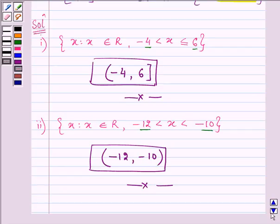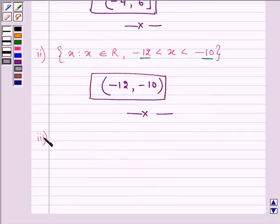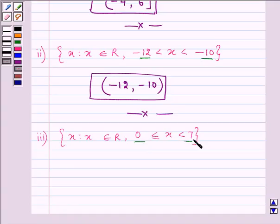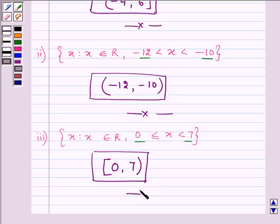Proceeding on to the third part. So here we are given X belongs to R, 0 is less than or equal to X which is less than 7. Now here the interval is from 0 to 7 where 0 is included but 7 is excluded. So that means it is open from one side but closed from another side and hence the interval will be written as 0 to 7, closed from this side but open from this side. So this becomes our answer of the third part.